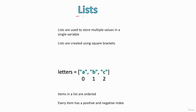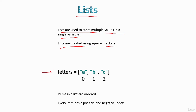Now let us talk about lists. Lists are used to store multiple values in a single variable. They are created using square brackets. This is the syntax for creating a list: we declare the name of the list, then the assignment operator, then within the square brackets we specify items separated by commas.